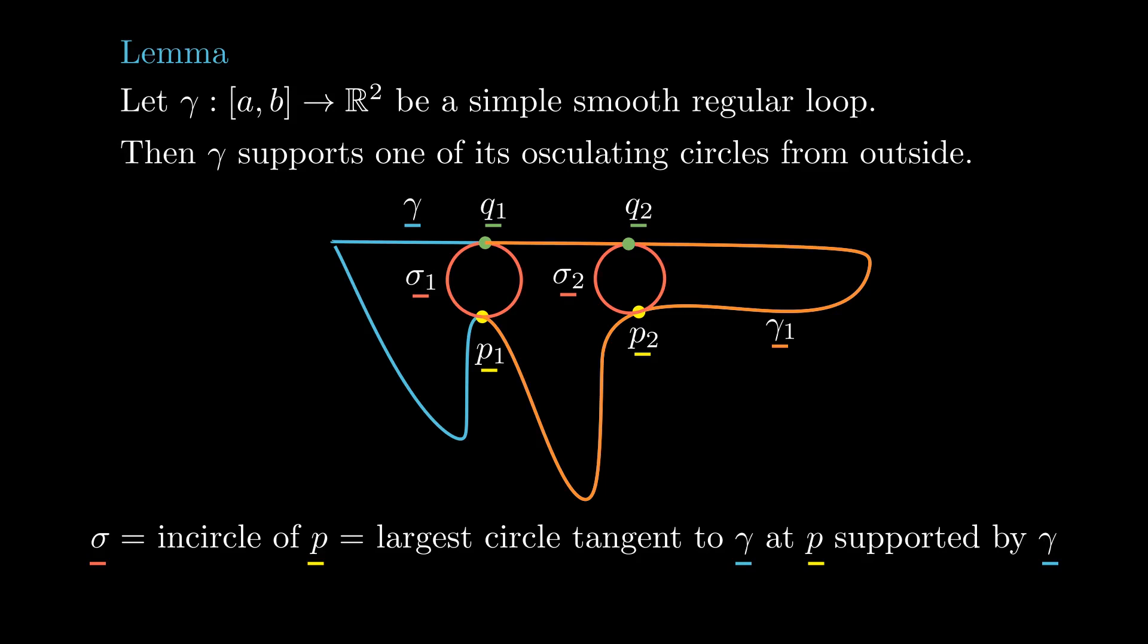Now let gamma2 be the arc of gamma that starts at p2 and ends at the next point of intersection with sigma2, which we call q2.